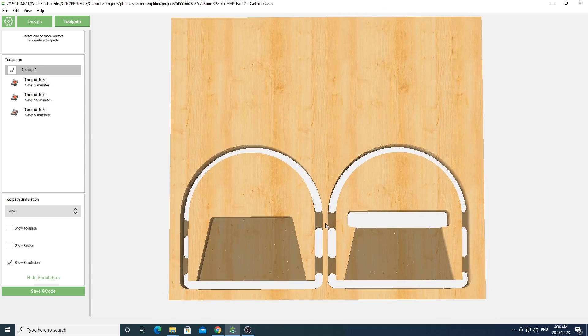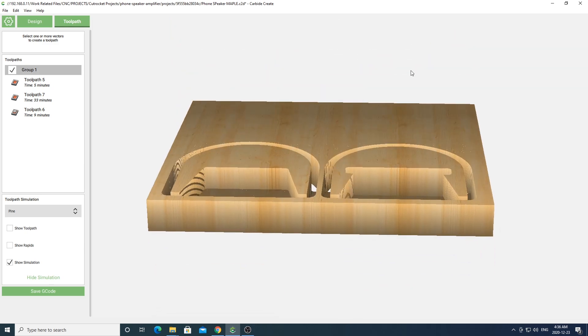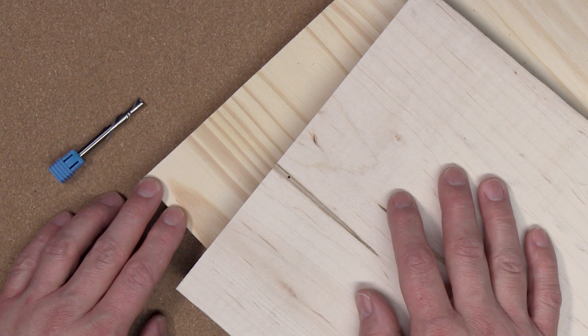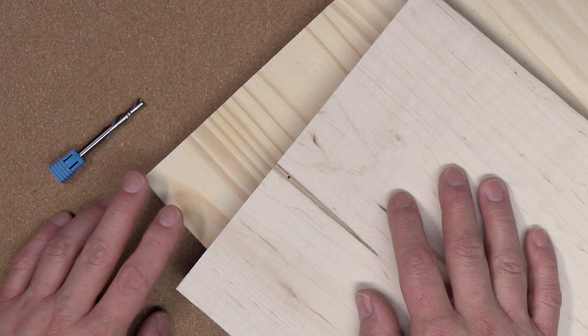Once you're done go ahead and hit the show simulation button to get a preview of what your project is going to look like. For my projects I'll be using a three quarter inch whitewood panel. I picked these up at my local Home Depot.